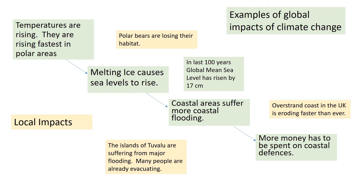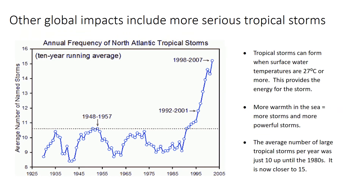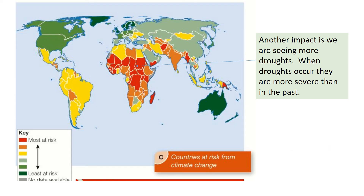Warmer seas from global warming are giving more energy, producing more tropical storms. The average number of tropical storms has dramatically increased over recent years, and we are getting more severe storms, for example Typhoon Haiyan. We are also getting more droughts, because climate change doesn't just make it warmer — it affects global weather patterns, producing both droughts and storms.